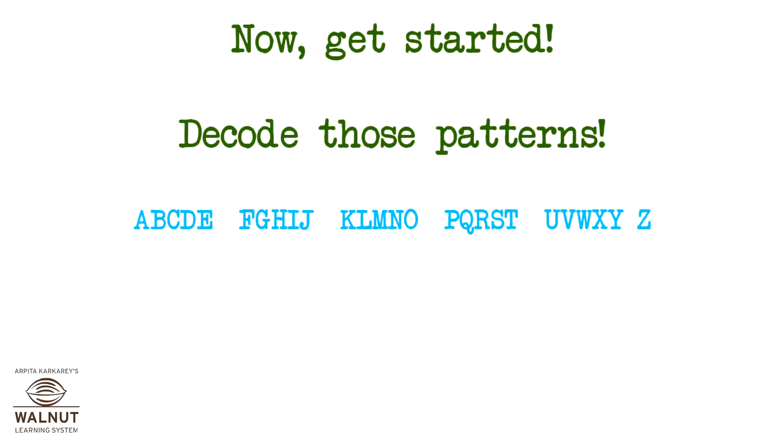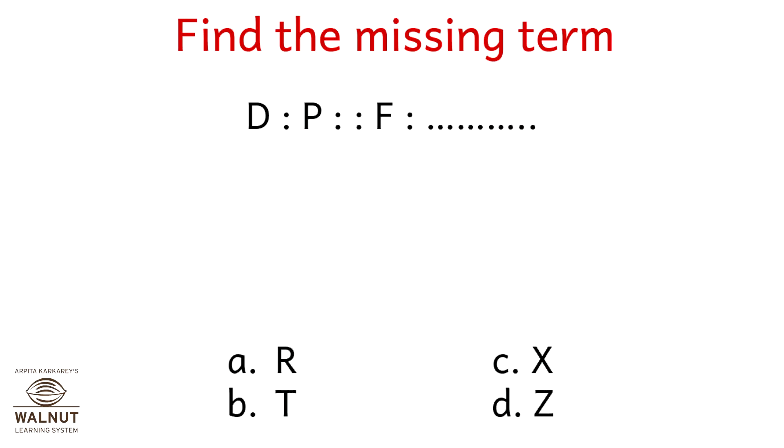Now, get started. Decode those patterns. Find the missing term. D is to P as F is to what?